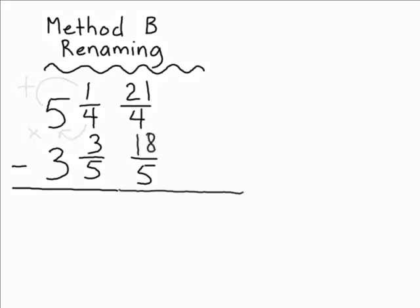To change 3 and 3 fifths into an improper fraction, rewrite the denominator as the same thing. To get the numerator, multiply 5 times 3, which is 15, and then add the numerator to that, which gives us 18. So now we have two improper fractions, 21 over 4 and 18 over 5. But you cannot subtract them yet because we do not have a common denominator, so the next step is to find a common denominator. 20 is the lowest common denominator of 4 and 5.